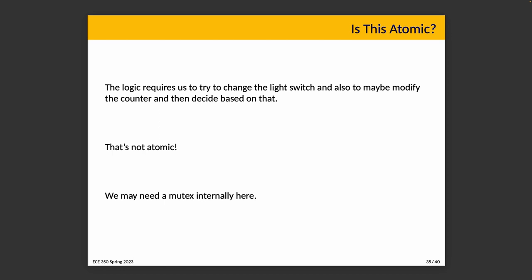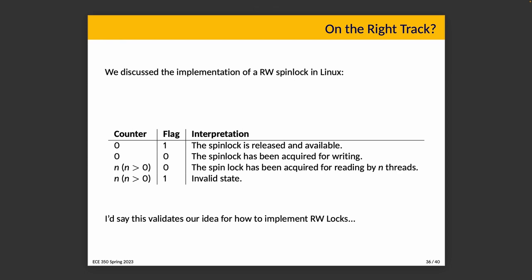It might make sense to use a mutex internally before modifying flag and counter variables — just don't forget to unlock the mutex internally before blocking a thread. In the previous course we discussed the implementation of a readers-writer spin lock where a counter keeps track of read threads and a flag indicates availability — one indicates available, zero is in use. This validates the plausibility of the implementation we've discussed. Note that flag being one means lights are off and flag being zero means lights are on in that implementation — a different convention from the earlier examples, but not wrong.